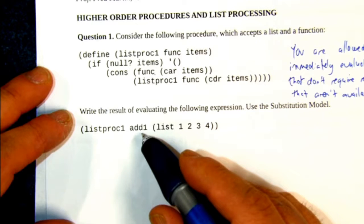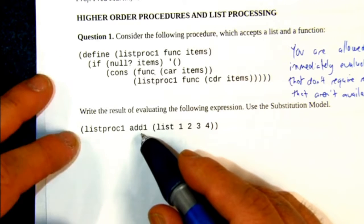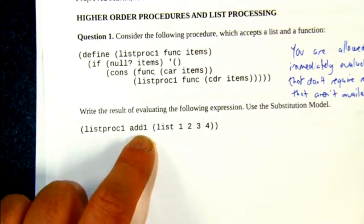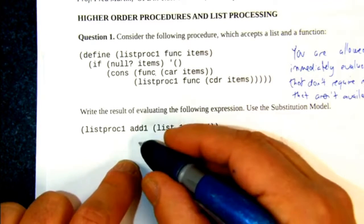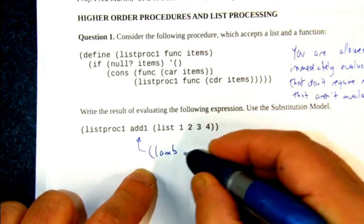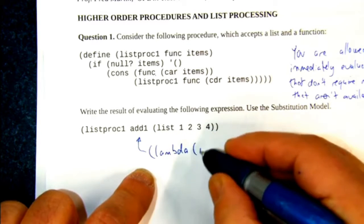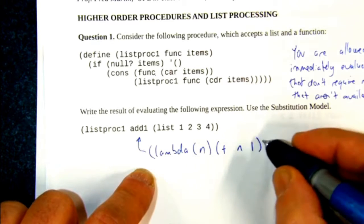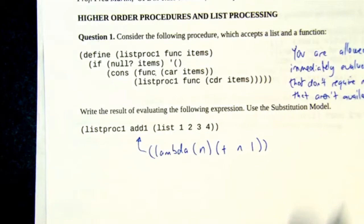Add1 is a function of one parameter that expects a number and adds 1 to it. So add1, just so we're clear on this, is identical to this lambda expression. That performs the add1 operation. It's a function of one parameter that adds 1 to it.